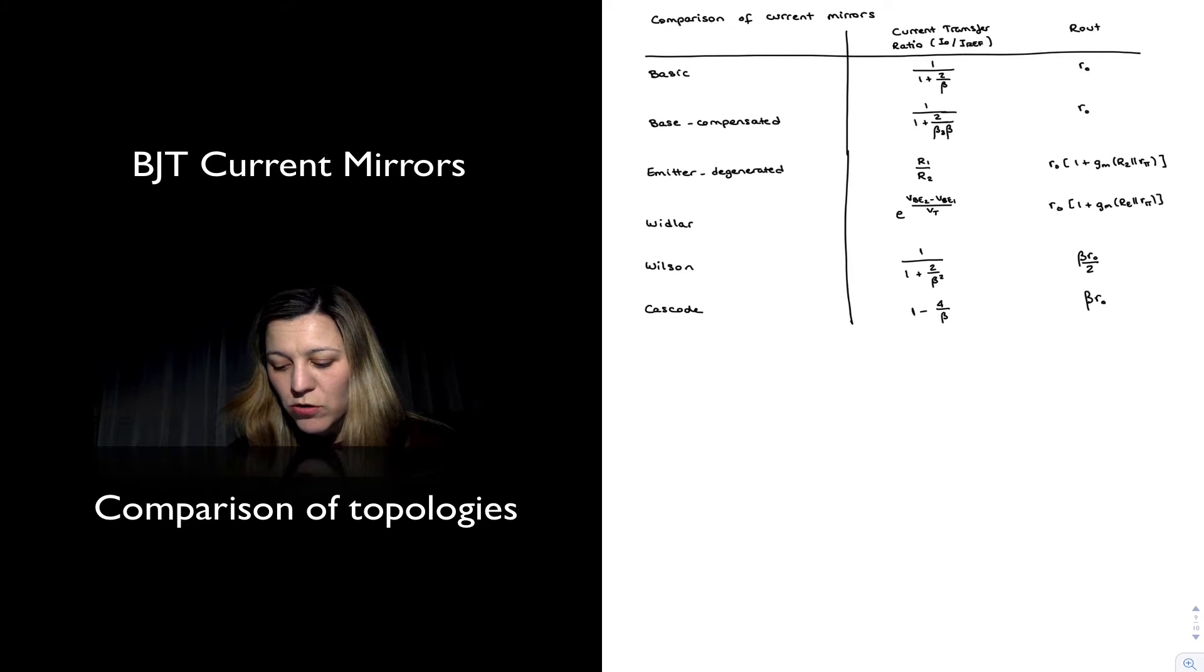For the base compensated mirror, we got an improvement in the current transfer ratio by modifying the term in the denominator. Instead of being 1 over 1 plus 2 over beta, it was now 1 over 1 plus 2 over beta 3 times beta, beta 3 being the beta value for the beta helper, or the transistor Q3 that was compensating for the base current.